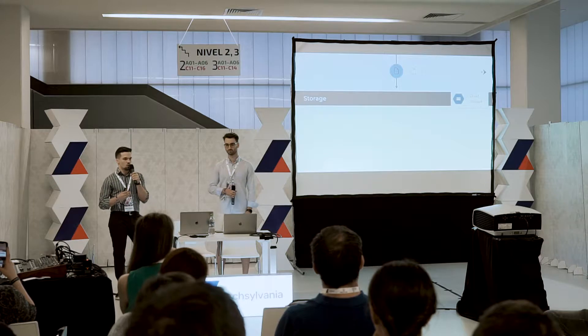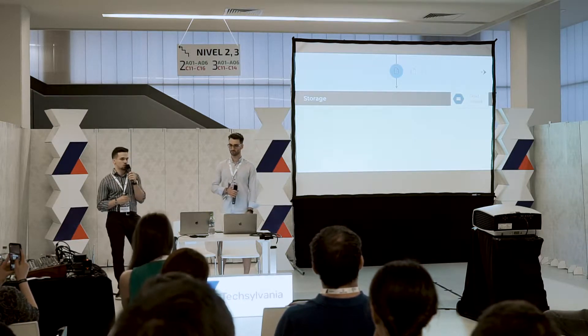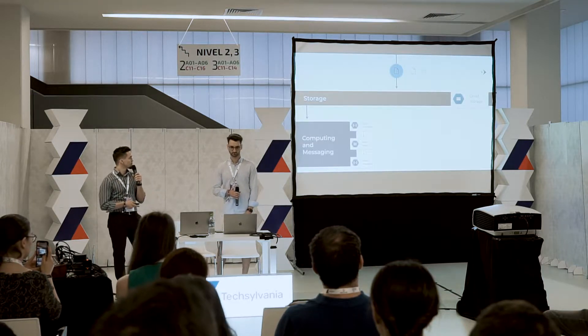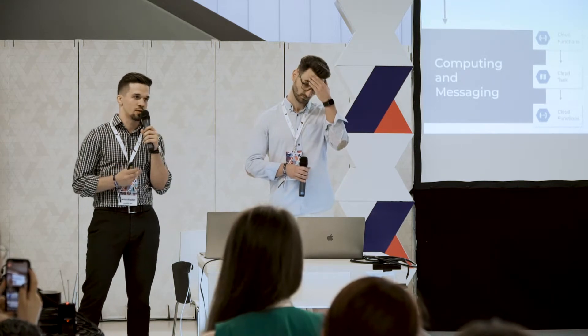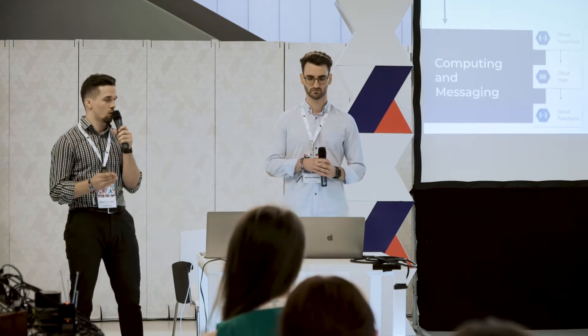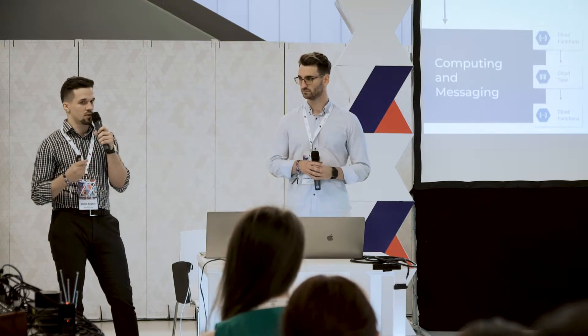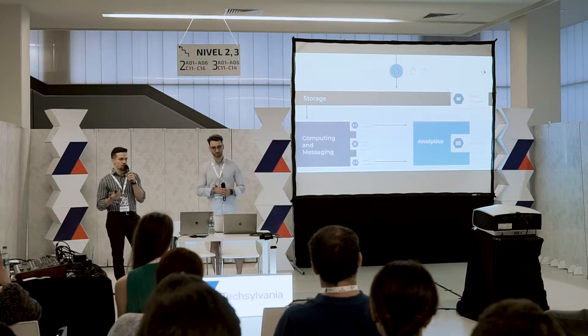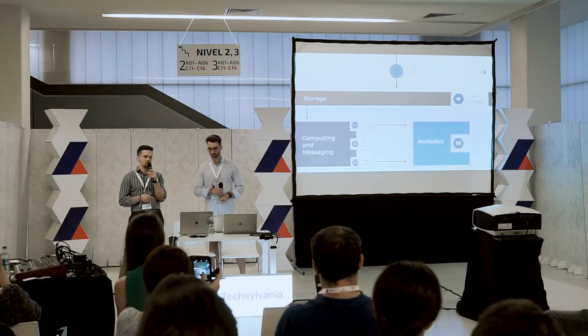Now that we know how our pipeline looks, let's see what technologies we'll use. We will use Google Cloud Storage to upload and keep all the files containing raw data. For computing, we'll use Google Cloud Functions. For communicating between functions, we'll use Cloud Tasks — a distributed task queue system. And for analytics, we'll use BigQuery, a data warehouse where we store and analyze our data.